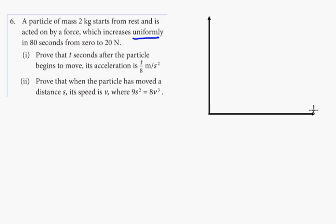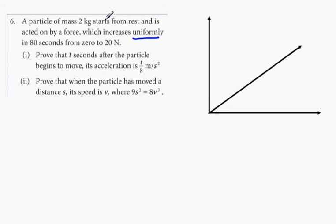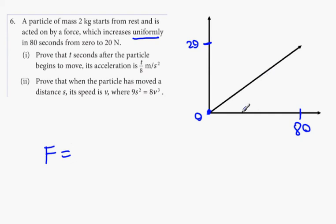What you're going to realize is that it's a straight line, because it says the force increases uniformly. The particle starts from rest and is acted on by a force which increases uniformly in 80 seconds from 0. So it starts at 0 and goes up to 20, and the time goes from 0 to 80. Prove that after T seconds the particle begins to move, the acceleration is T over 8. Force equals — it's the equation of a line, so it's mx plus c.